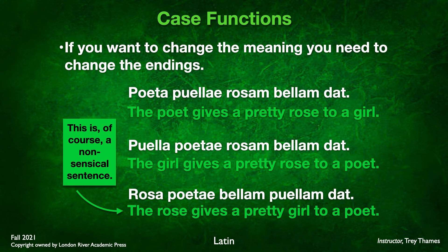In the last example, we changed rosam to rosa — now it has the nominative ending, making it the subject. So we have rosa poetae dat bellam puelam — 'The rose gives a pretty girl to a poet.' The word girl is now the direct object. Of course, that's a nonsensical statement, but the ending tells you how the word functions in the sentence. Rosa is the subject doing the giving, and puelam with the accusative ending is the thing being directly affected by the verb.